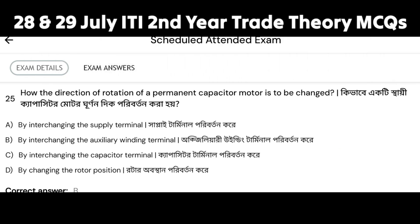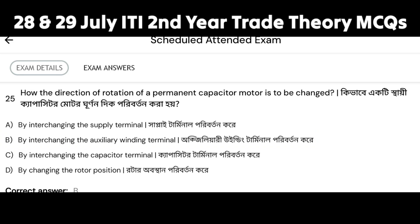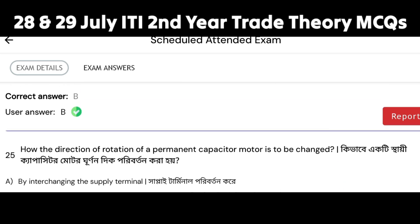How is the direction of the rotor of a permanent capacitor motor changed? It is changed by interchanging the connection of the auxiliary winding. Option B is the correct answer.